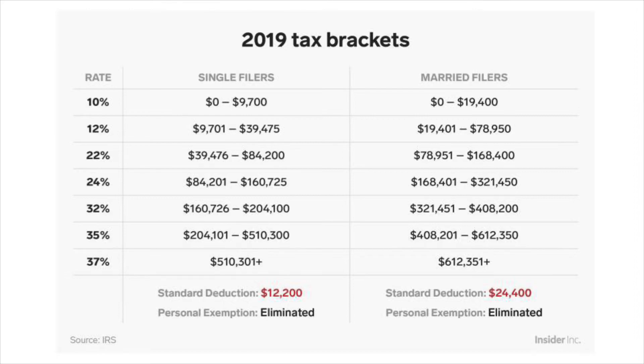Looking at our 2019 tax brackets, his taxable income falls in the 22% bracket, so we will need this one and any previous brackets: 10, 12, and 22%.